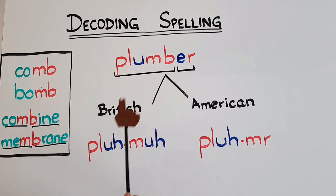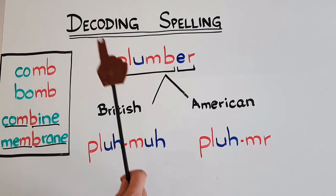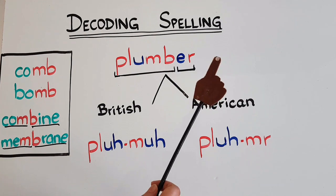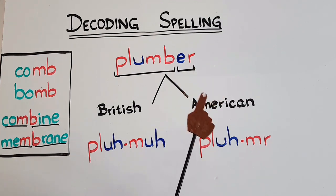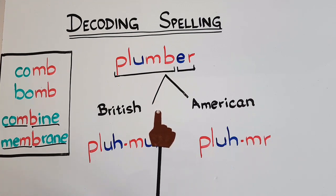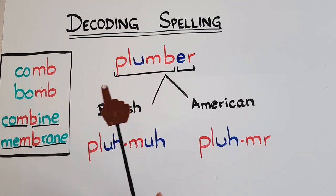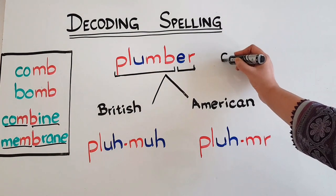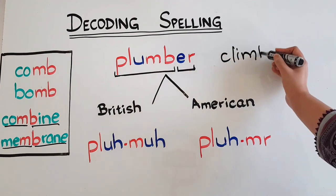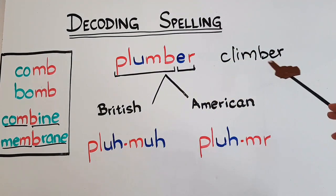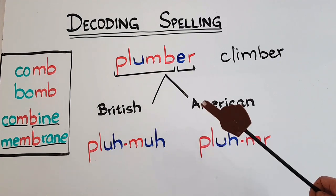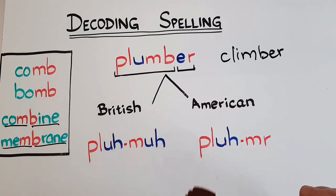I hope you now understand the difference and the reasons for not pronouncing B in 'plumber.' If you want to watch a complete video on silent B rules or silent B words, I'm giving the link above and in the description box. I'm also giving the link to the syllable division playlist - do watch it, it's really useful for spellings and pronunciation. Like 'plumber,' we have another word: 'climber.' It's a challenge for you to break this word into syllables and tell me the pronunciation in the comment box. If you find the video useful, please give a thumbs up. Take care and bye for now!